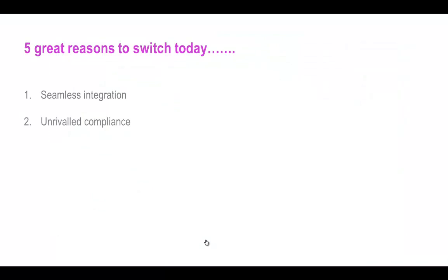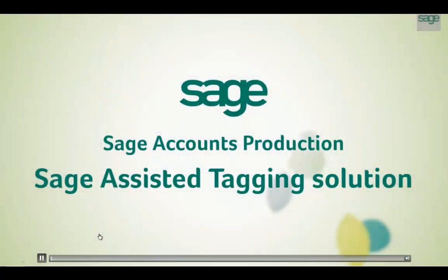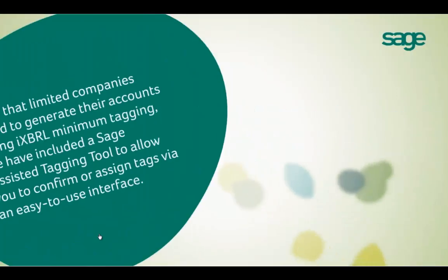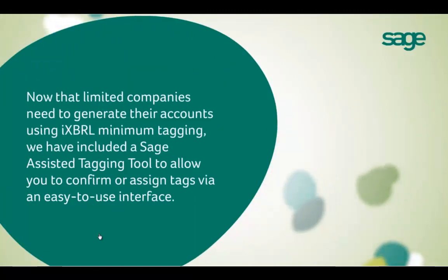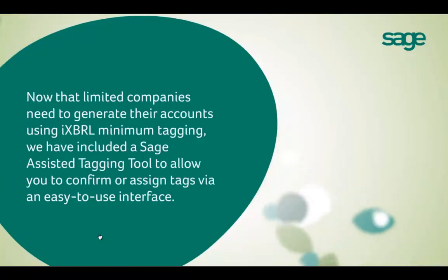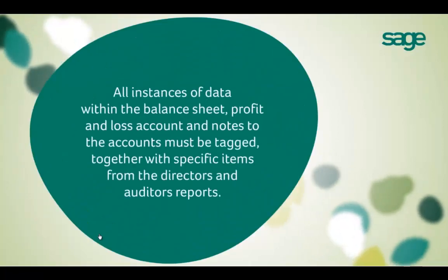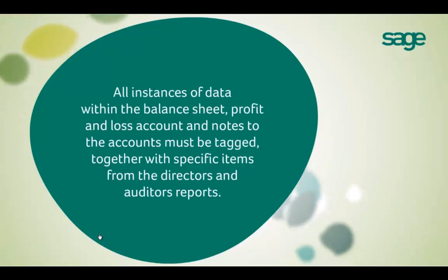The second great reason to switch to Sage is our unrivalled compliance. The HMRC-recognised Sage Assisted Tagging solution identifies up to 10% more automated tags than other compatible iXBRL software and is up to 75% faster than competing products. We'll now have a look at how easy we make iXBRL compliance using our Assisted Tagging tool.